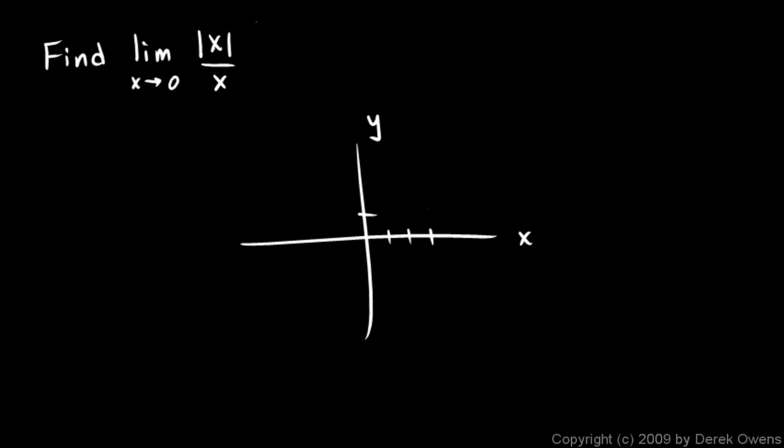But there's got to be an open circle right there. The function doesn't exist at x equals 0 because we can't have a 0 denominator.